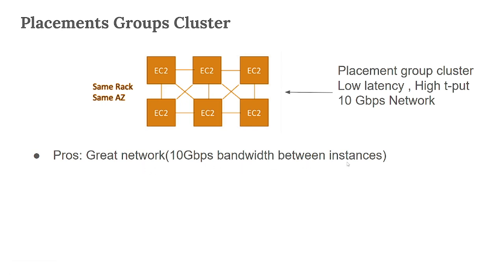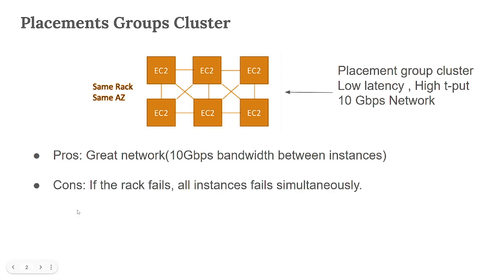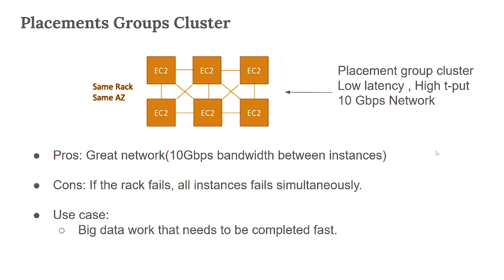The pros: great network — 10 Gbps bandwidth between instances is supported. The cons: if the rack fails, because all the EC2 instances are placed in the same rack, all instances fail simultaneously — at the same time all instances will fail and we will lose them. The use case is big data workloads that need to be completed fast.